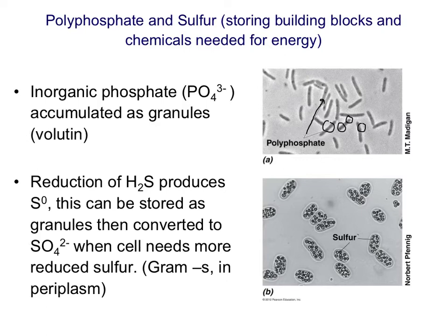A lot of photosynthetic bacteria will oxidize hydrogen sulfide, using it instead of water. They take electrons from H2S and use them to fix CO2 and convert it into sugars. That elemental sulfur, S0, can then be stored in an insoluble form in granules. Here is a picture of a bacterium with multiple sulfur granules. Later, the cell can convert that elemental sulfur to sulfate and use it for various purposes, such as building proteins. In the case of gram negatives, those sulfur granules are often stored in the periplasm, which is why they are so visible via light microscopy.